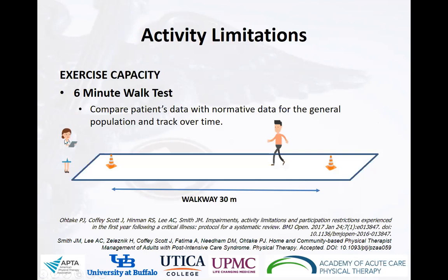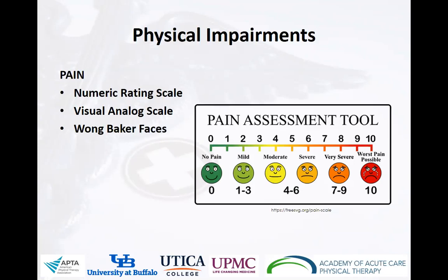In a subset of people that have experienced critical illness, they will report pain. We recommend that you use the standard pain rating scales we're all familiar with — certainly the numeric pain rating scale anchored with 0 to 10, where the patient reports their pain as a whole number. We also have the visual analog scale, 0 to 10, where the patient would indicate on a line. And you can also use the Wong-Baker faces to assess pain.